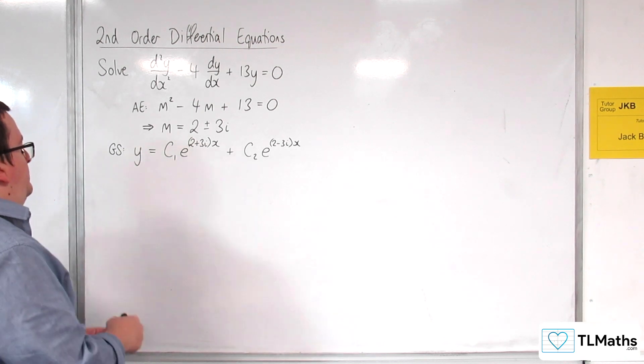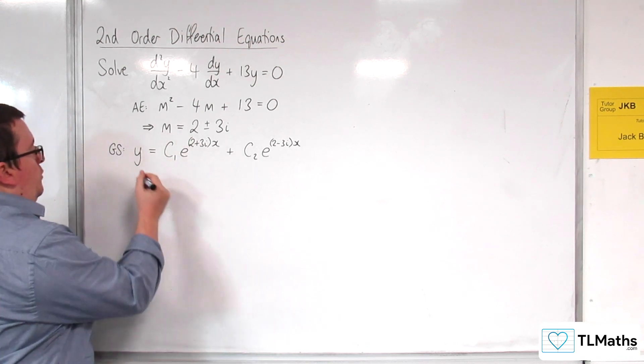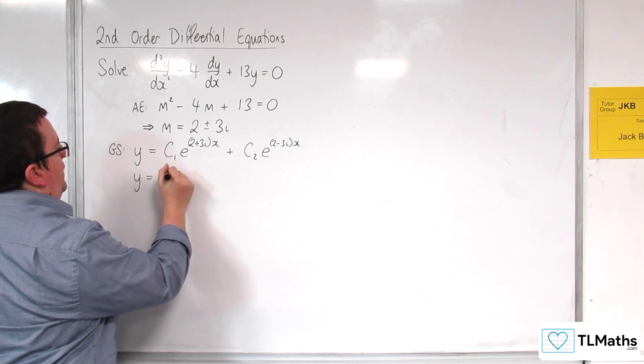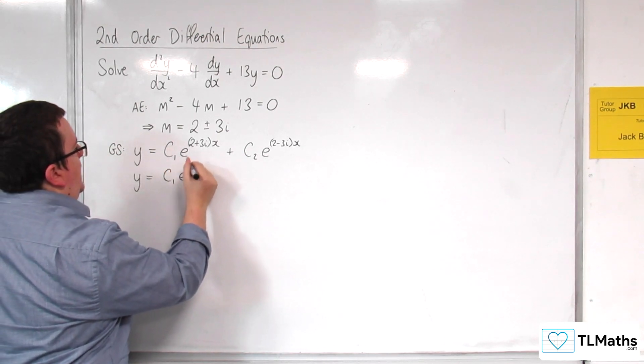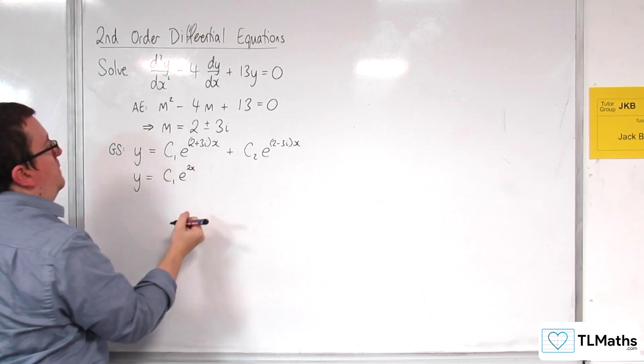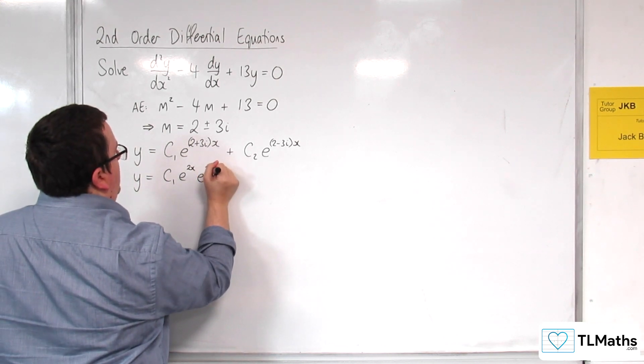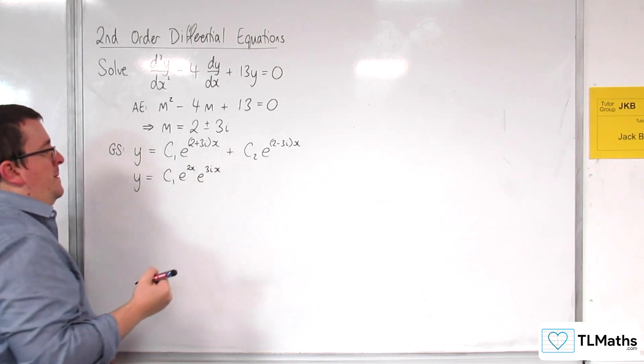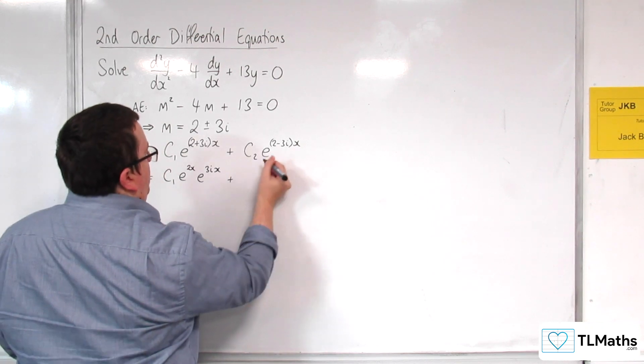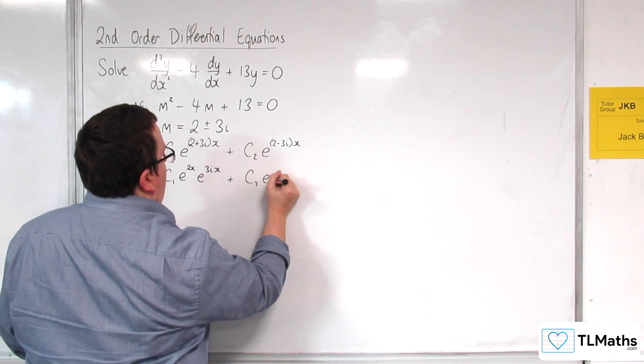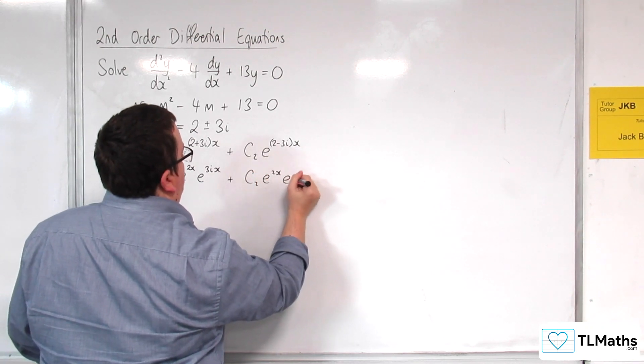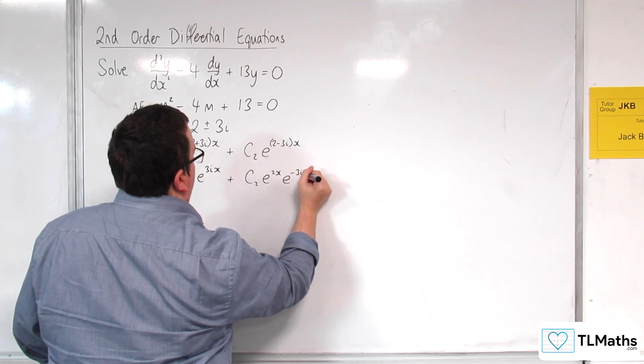So first thing I'm going to do is I'm going to write this as y is equal to c1 e to the 2x times by e to the 3ix. And I'm going to split this one up as well, c2 e to the 2x e to the minus 3ix.